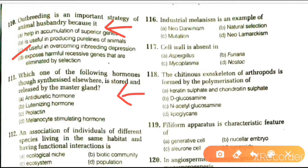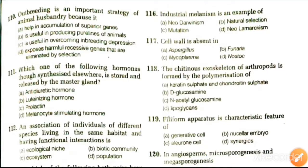Next question: which of the following hormones is synthesized elsewhere but stored and released by the master gland? Options are anti-diuretic hormone, luteinizing hormone, prolactin, and melanocyte stimulating hormone. The answer is anti-diuretic hormone, because ADH or vasopressin is a peptide hormone synthesized in the hypothalamus but stored and released from the posterior pituitary lobe.